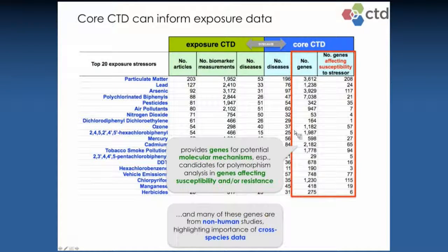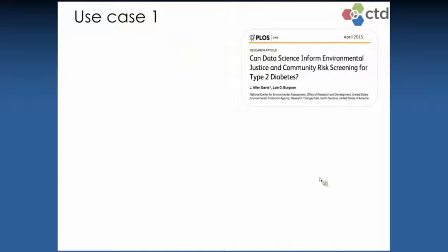A lot of these data come from cross-species studies, and our goal is that we can help figure out which model systems are going to be corroborated by exposure data in the literature, or help inform which model systems may be best for looking at more mechanistic studies following exposure reports. I wanted to show you a couple of use cases as to how we envision this information being used. These data have only been integrated for about two months and we're continuing to curate, so as the data sets become more robust, there will be a lot more we can do.